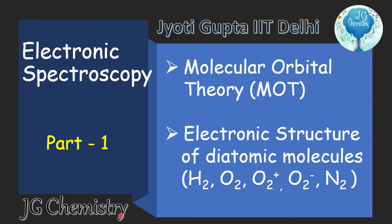Hello everyone, welcome to JG Chemistry. In today's video we are going to learn electronic spectroscopy. We will cover molecular orbital theory (MOT) and its electronic structure for diatomic molecules. In the next video we will learn about term symbols — how to derive them for diatomic molecules, and how to calculate the electronic structure for ground state and excited states, along with selection rules. MOT, electronic structures, and term symbols are very important not only for MSc chemistry students but also for CSIR NET and GATE students.